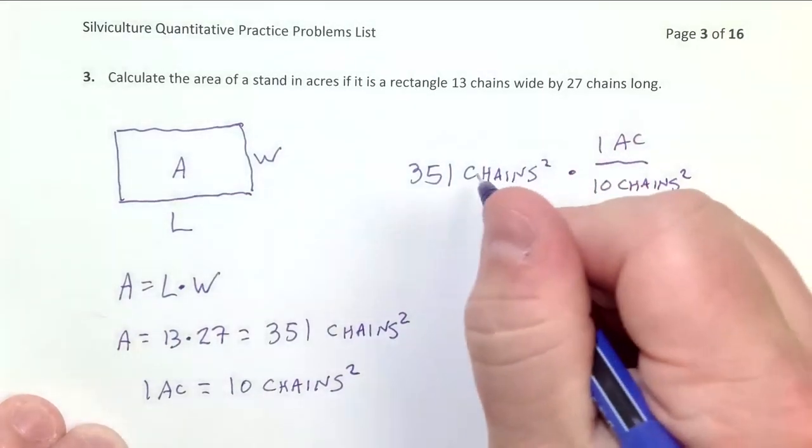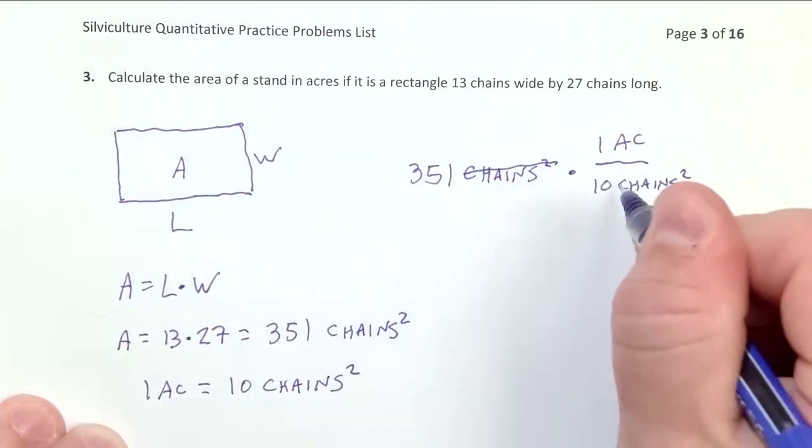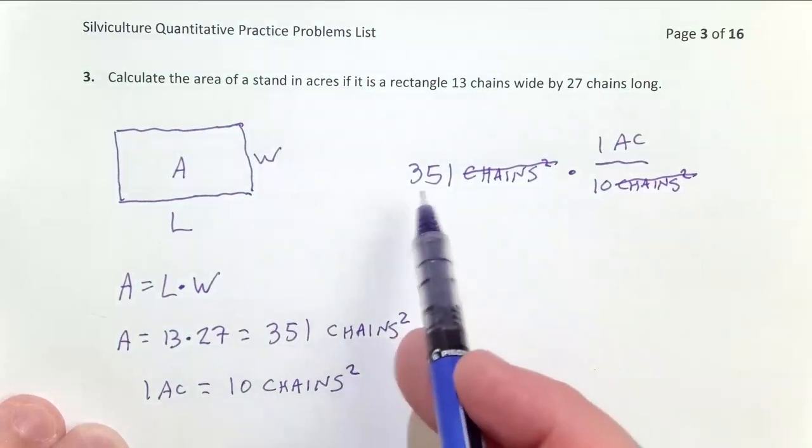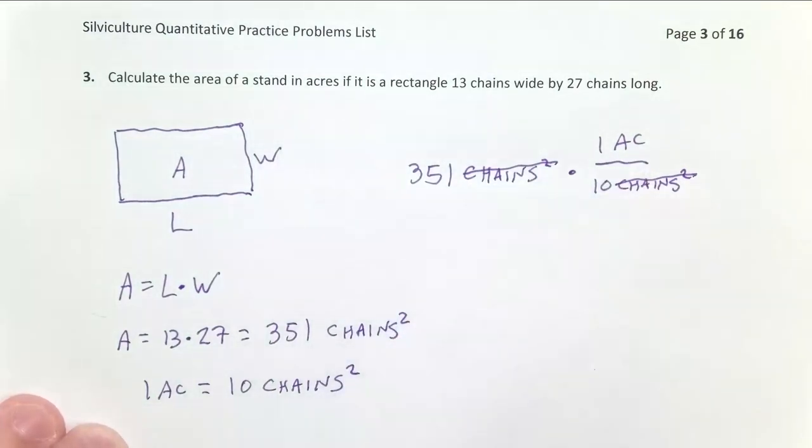And if we look at this, we'll notice the chains squared is in the denominator over here, so it cancels out, leaving us just with acres. So I basically take my 351 and divide it by 10.